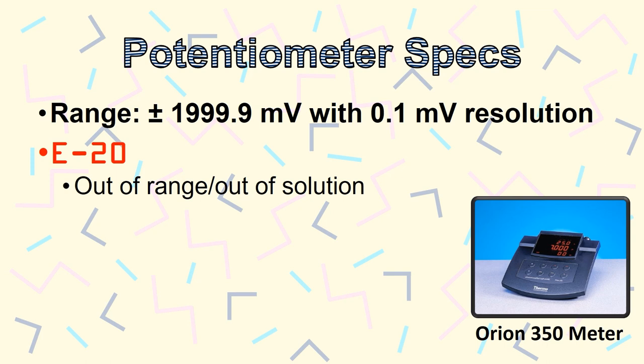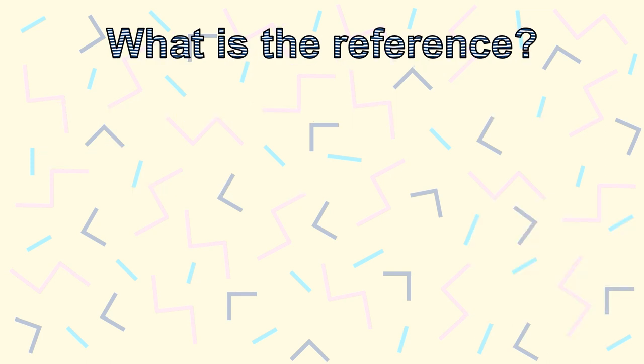Since we're measuring an unknown, we'll need a reference, or a control. We could use a standard hydrogen electrode, but what is that?